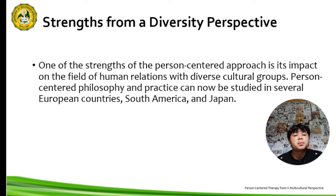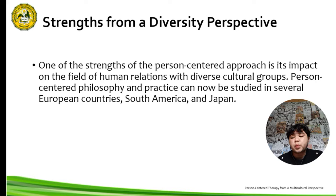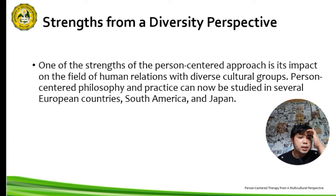Shortly before his death, Rogers conducted intensive workshops with professionals in the former Soviet Union. Kain's 1987 article sums up the reach of the person-centered approach to cultural diversity: 'Our international family consists of millions of persons worldwide whose lives have been affected by Carl Rogers' writing and personal efforts, as well as his many colleagues who have brought innovative thinking and programs to many corners of the earth.' There is no doubt that Carl Rogers had a global impact — his work reached more than 30 countries and his writing was translated into 12 languages.